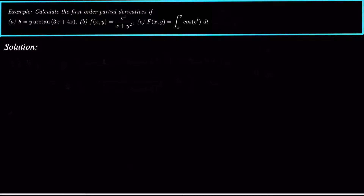Today we're looking at some more advanced examples of partial derivatives and calculating partial derivatives of functions. The example says calculate the first order partial derivatives for: (a) h equals y arctan(3x + 4z), (b) f equals e to the x over x plus y squared, and (c) f of xy equals the integral from x to y of cosine of e to the t dt.